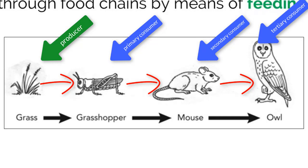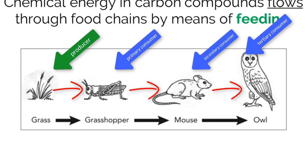Understanding feeding relationships allows ecologists to construct food chains and food webs to better understand how energy moves through an ecosystem.